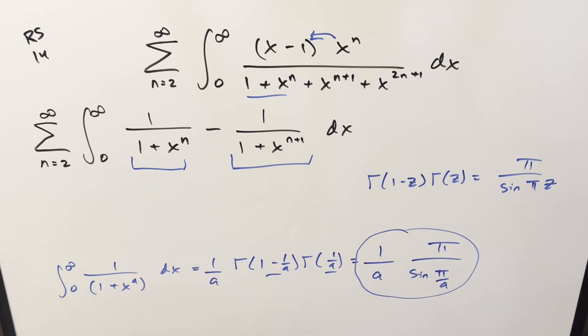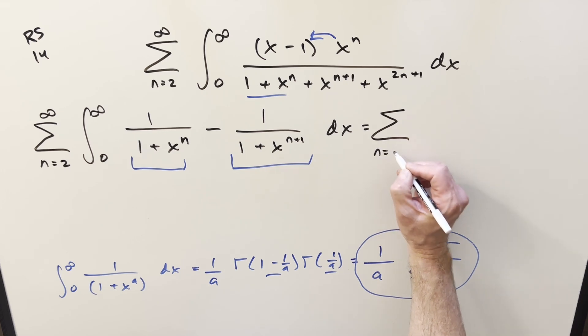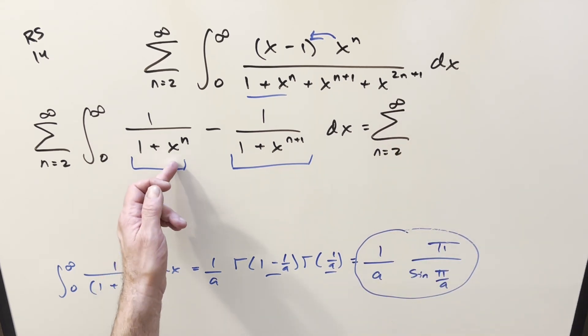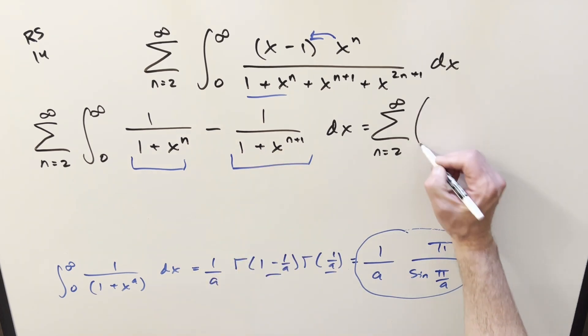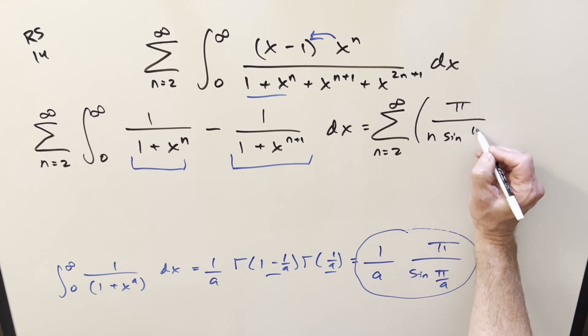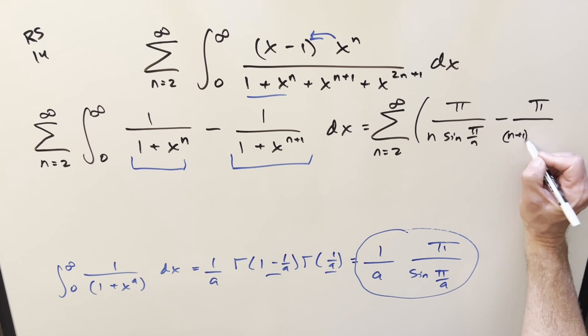So let's do the integral part on this. So for this whole thing, we're still going to be within this sum from n equals 2 to infinity. The a value in the formula is just n here, and here it's going to be n plus 1. So what we're going to have here is going to be just pi over n sine pi over n minus pi over n plus 1 now sine pi over n plus 1.